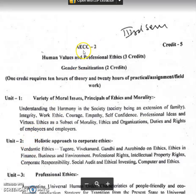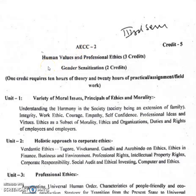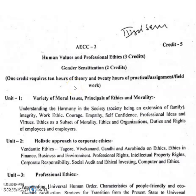You can see this is the 3rd semester, AECC 2 — Women Values and Professional Ethics. You can see here 3 credits. Gender Sensitization: 2 credits. So total credit is 3 plus 2 equals 5. One credit requires 10 hours of theory and 20 hours of practical or assignment or fieldwork. These are the conditions of the credit.